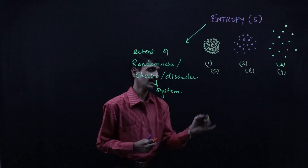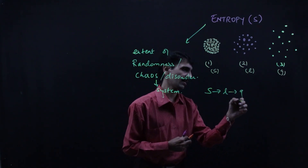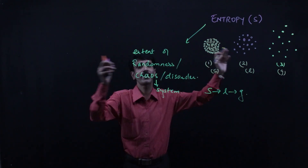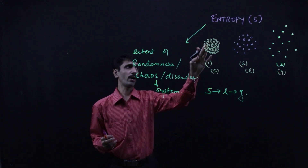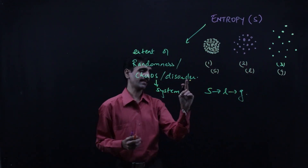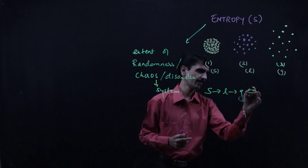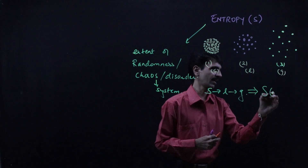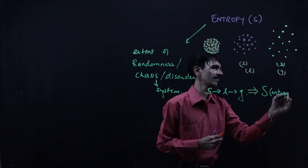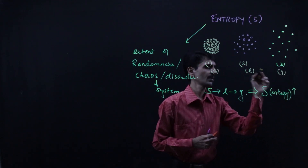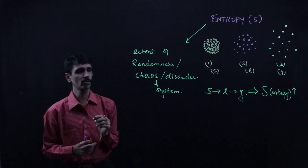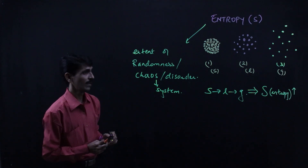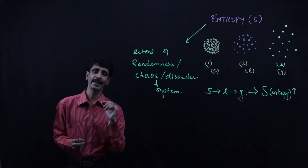As we go from solid to liquid to gas, the disorder is going to be increasing. Solid represents order; gas represents disorder. So as we go from solid to liquid to gas, entropy — represented by capital S — will increase. In the case of solid, entropy is lowest, and in the case of gas, entropy is highest. In this way, entropy can be related to physical state.